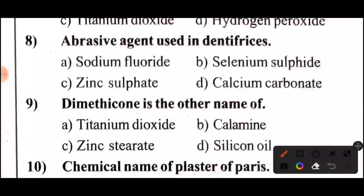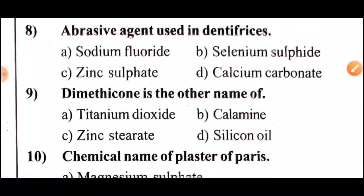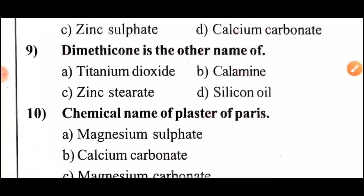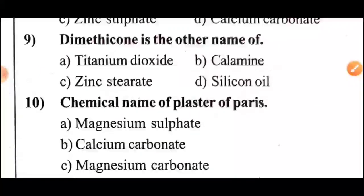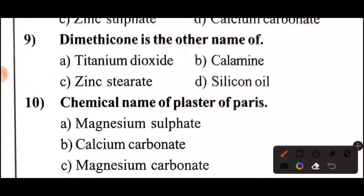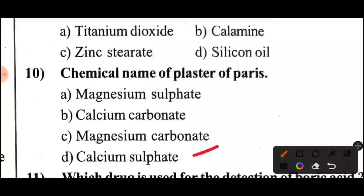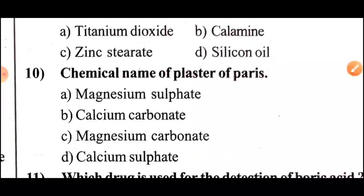Question 8 (or 9): Dimethicone is another name of — Option D — Silicon Oil. Question 10: Chemical name of Plaster of Paris — Option D — Calcium Sulfate.